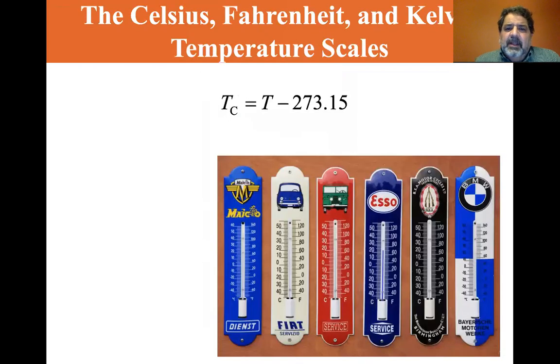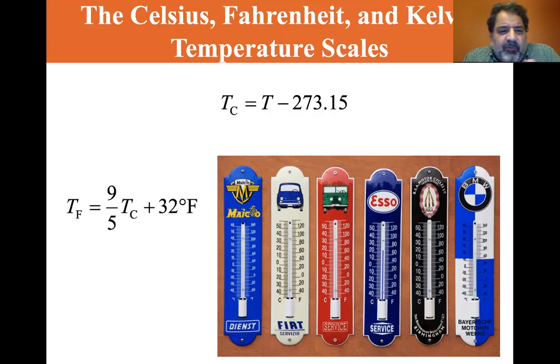Okay, now to convert between Kelvin and Celsius, you take the Kelvin temperature and you subtract 273.15. To convert from Celsius to Fahrenheit, you use this formula, which is 9 fifths of the Celsius temperature plus 32 degrees F.